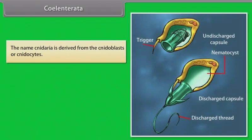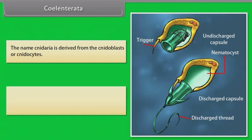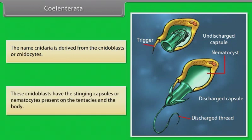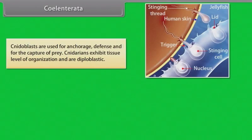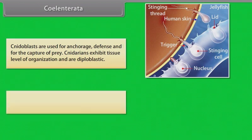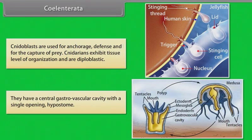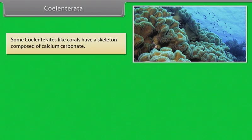The name Cnidaria is derived from the cnidoblasts or cnidocytes. These cnidoblasts have stinging capsules or nematocysts present on the tentacles and the body. Cnidoblasts are used for anchorage, defense and capture of prey. Cnidarians exhibit tissue level of organization and are diploblastic. They have a central gastrovascular cavity with a single opening called the hypostome. Some cnidarians, like corals, have a skeleton composed of calcium carbonate.